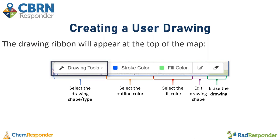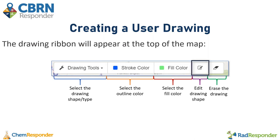The drawing tools button is where you select the drawing shape or type, for example a rectangle or a line. The stroke and fill color can be set at the beginning of your drawing or changed at any point throughout. The edit drawing shape button lets you edit a drawing shape. And the final button is erase or remove drawing, which will remove the drawing from the map.